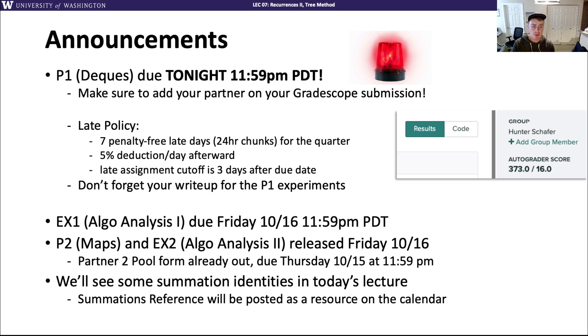A couple announcements before we begin. Project 1 DEX is due tonight, Wednesday at 11:59 p.m. Seattle time. Make sure you add your partner on your Gradescope submission. Whenever you submit on Gradescope, you can see in this picture here, there's next to your name add group member and you should go add your partner to your submission. You have to do this every time you make a submission.